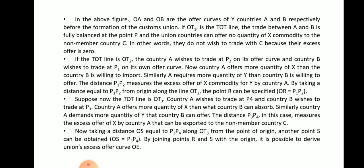In the figure, OA and OB are the offer curves of countries A and B respectively. Before the formation of the customs union, if OT1 is the terms of trade line, the trade between A and B is fully balanced at point P, and the union countries can offer no quantity of commodity X to the non-member country C. In other words, they do not wish to trade with C because their excess offer is zero.